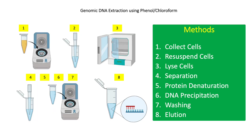For the phenol-chloroform method, there are eight distinct steps: 1. Cell collection. 2. Cell resuspension. 3. Cell lysis. 4. Separation of DNA from other biomolecules. 5. Protein denaturation. 6. DNA precipitation. 7. Washing of DNA. 8. Elution of extracted DNA.